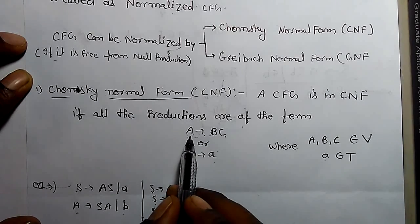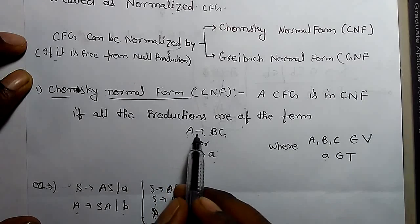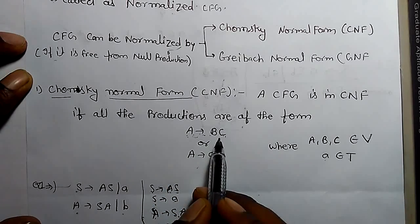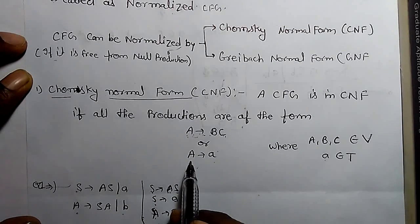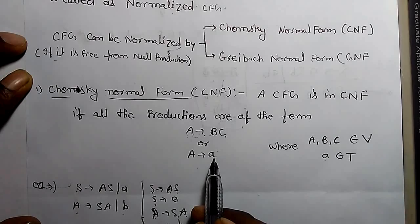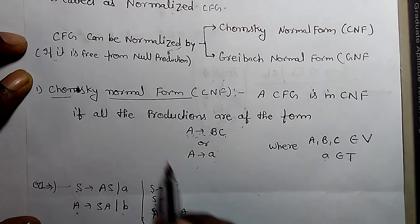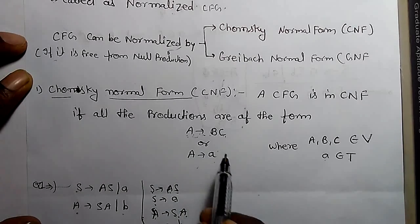There should be one variable in the left side and only two variables in the right side, or one variable in the left side and one terminal in the right side. Only these two conditions exist for CNF.